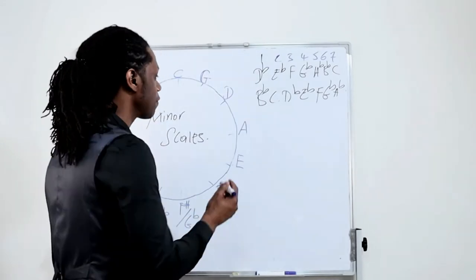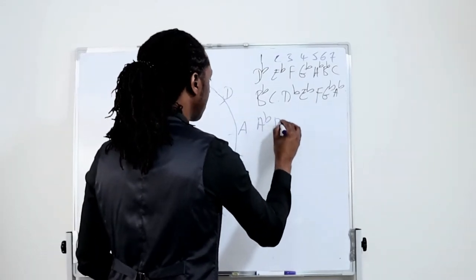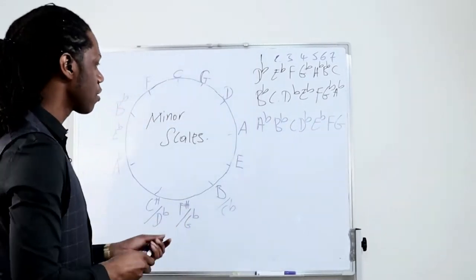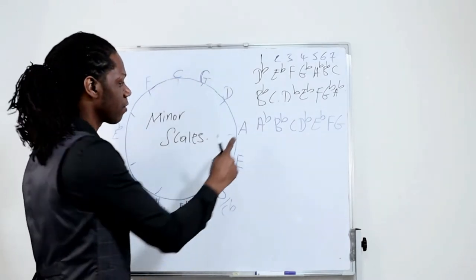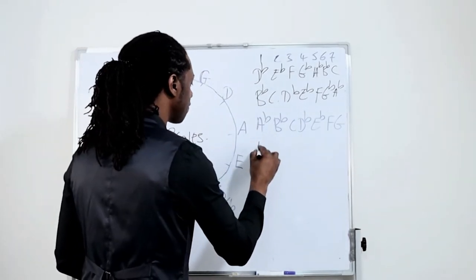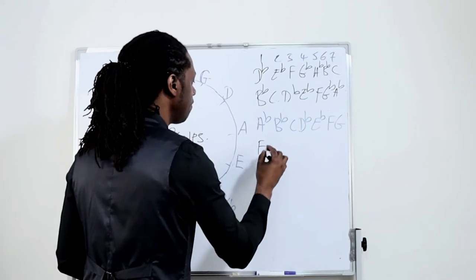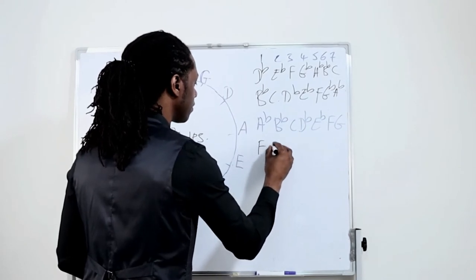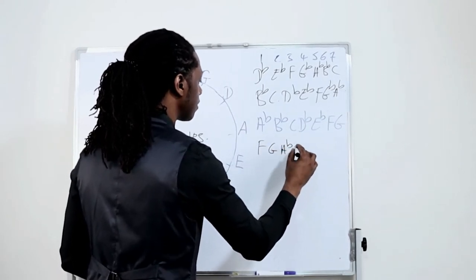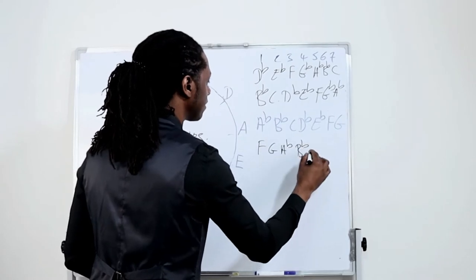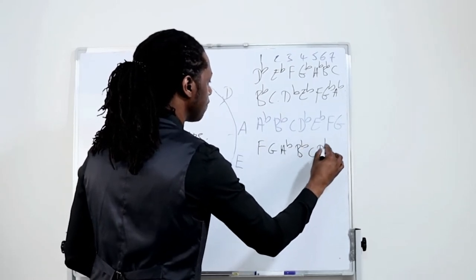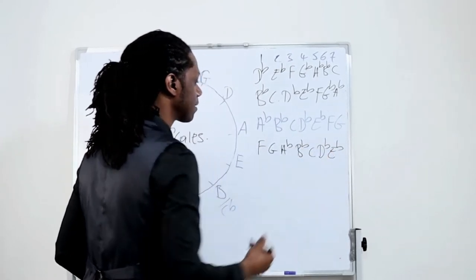How about A flat? A flat has four flats: A flat, B flat, C, D flat, E flat, F, and G. We go to the sixth degree — one, two, three, four, five, six — and we get F. So we have F, G, A flat, B flat, C, D flat, E flat. That is your F natural minor.